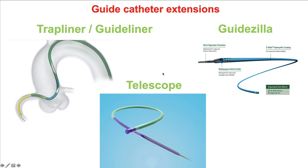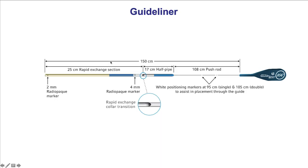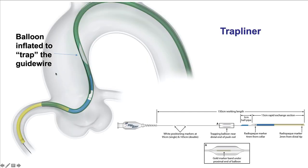These are the currently available systems in the United States. The Guideliner was the original one. It has a 25-centimeter cylinder and then a 108-centimeter pushrod. There is a half-pipe that helps equipment entering into the distal cylinder. The Trapliner is very similar, but has the difference that the cylinder is shorter, and there is a balloon built-in on the pushrod that can be used to trap the guide wire and remove equipment without having to use another trapping balloon.